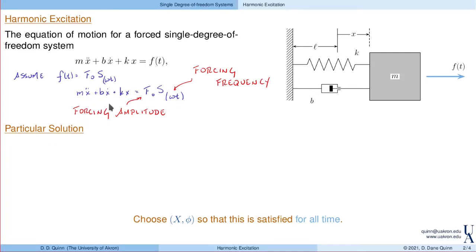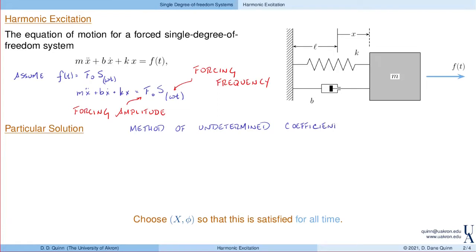How do I solve an equation like this? We solve it with the method of undetermined coefficients — or, as I like to call it, the method of really good guessing. Because I have to guess a solution and then try to make it work. Fortunately, someone once showed me what the right guess was, and now I'm going to show it to you.